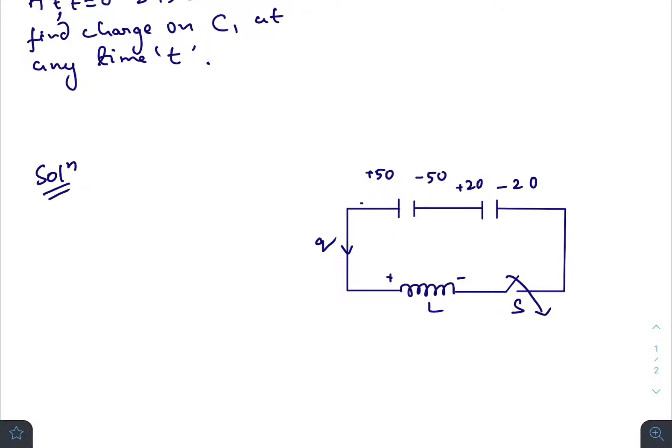So here we will have 50 minus q, here we will have 20 plus q, here we will have 20 minus q, and here we will have minus 50 plus q. Let us write the polarities like this.